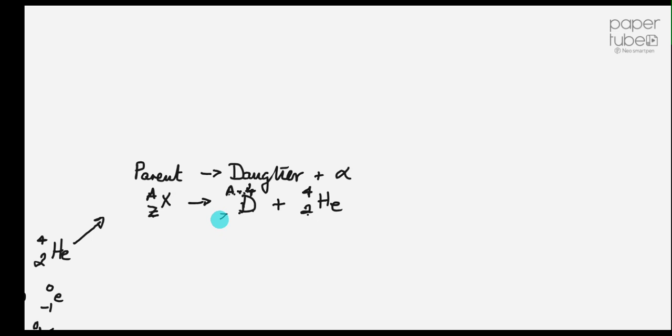So therefore this one here, we'll talk about the atomic numbers now. So that must be Z take away 2. Z take away 2, add 2 gives me Z. So that's the general rule for the nuclear disintegration involving an alpha particle.